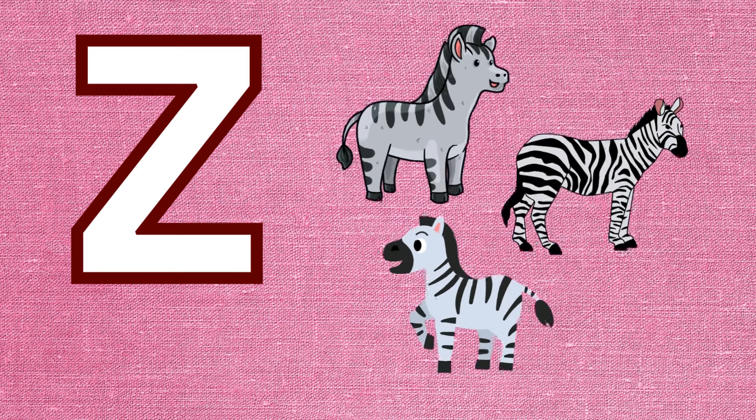M is for mat, m-m-mat. N is for net, n-n-net. O is for orange, o-o-orange. P is for pet, p-p-pet.